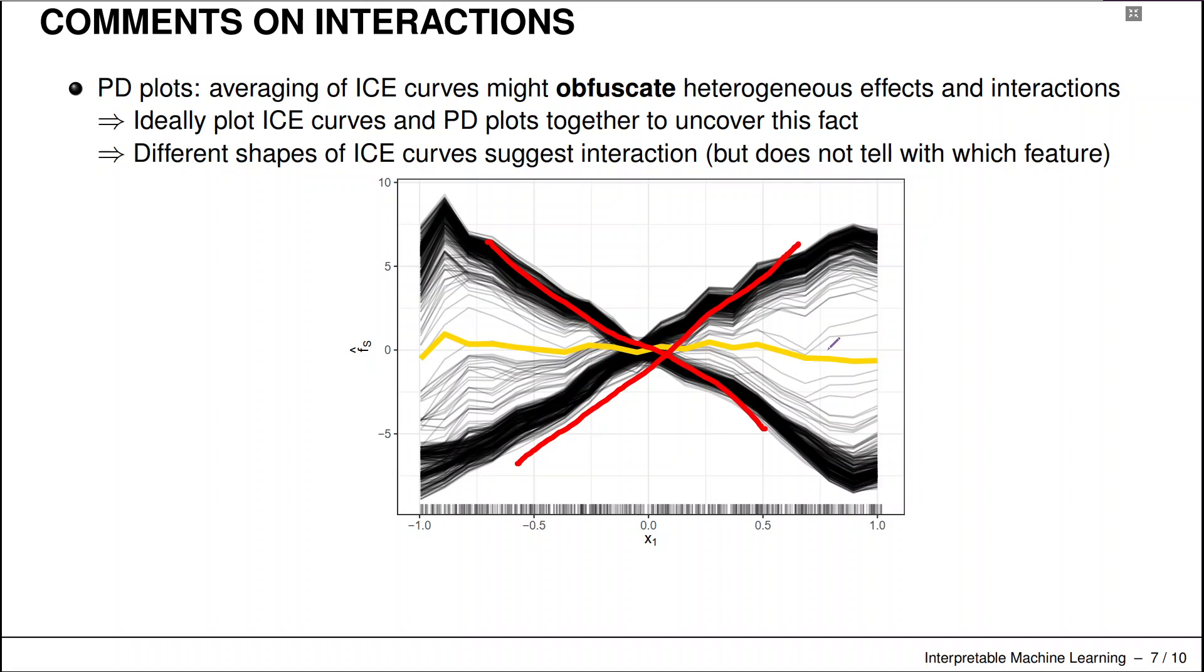There are two very strong effects. They just have opposing signs. And there's a strong interaction going on between blood pressure and gender with respect to the predicted outcome. Our PDP plot just simplifies the situation too much by averaging out over these two inhomogeneous groups. And the other problem is that if we just look at the PDP plot, this only tells us probably if such a situation goes on.